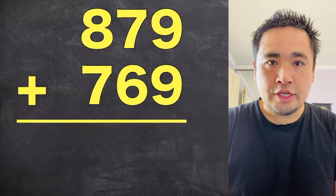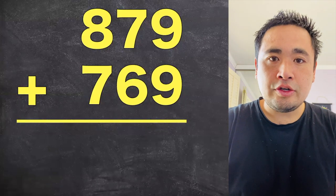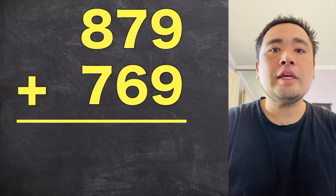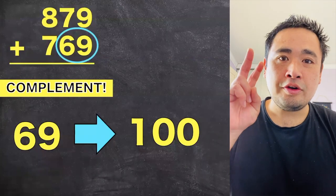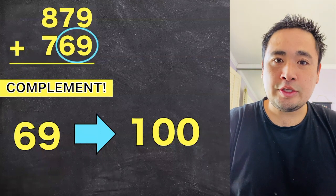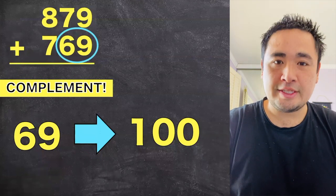Now when we're adding three-digit numbers together, I wanted to introduce to you guys the idea called the complement. So in the complement, we're trying to look for the other number which adds to 100. So in this case, we're trying to find the complement to 69.